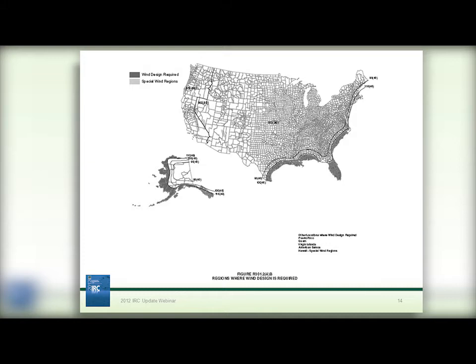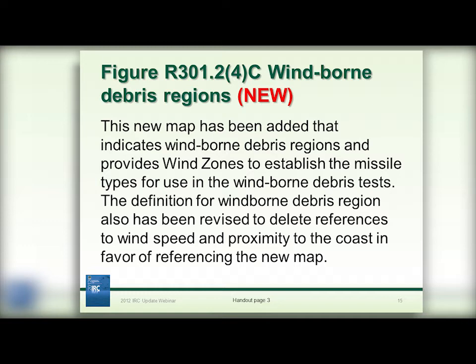As you can see on the wind map, along the southeast coast of the United States, the entire panhandle of Florida, and the Gulf Coast are shaded regions — those are areas that require wind design rather than using the prescriptive requirements of the IRC. There is also a new map called windborne debris regions, delineating areas in hurricane zones of the Atlantic and Gulf Coast. The definition of a windborne debris region has been revised to delete references to wind speed and proximity to the coast in favor of simply referencing the new map.